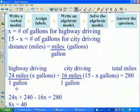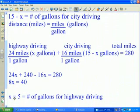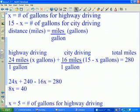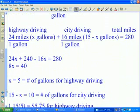All I have to do now is simplify and solve this equation. So 24 times x plus 16 times 15 minus 16 times x. So 240 minus 16x equals 280. Solve for x, I get x is 5. x represents the number of gallons for highway driving, so 5 gallons for highway driving, 15 minus 5, or 10 gallons for city driving.